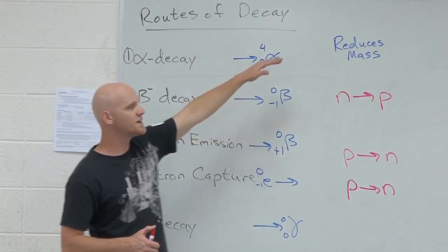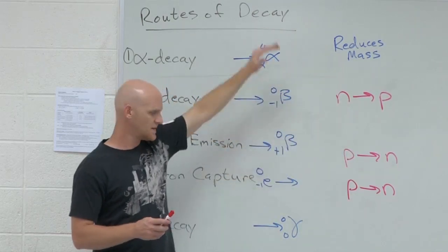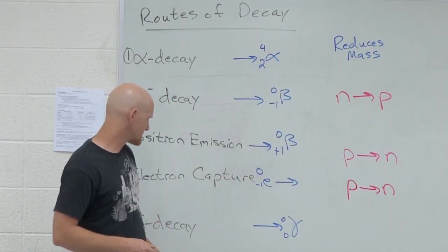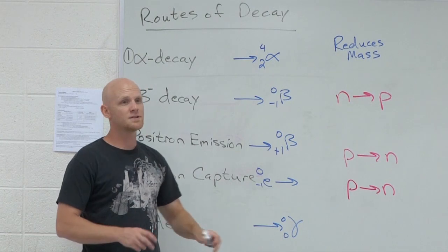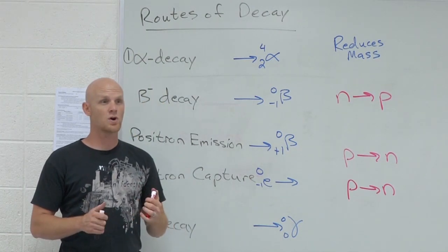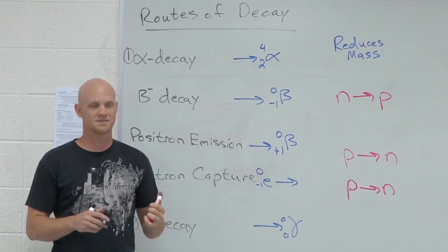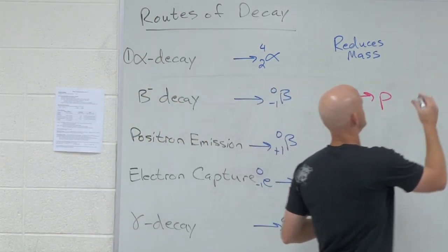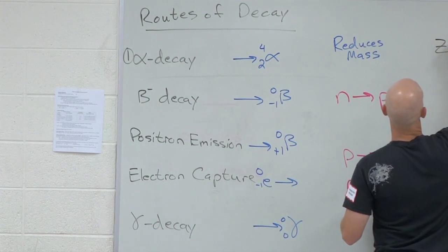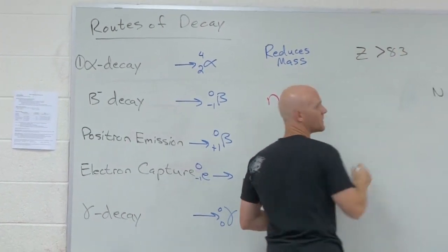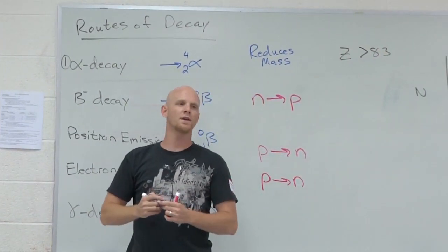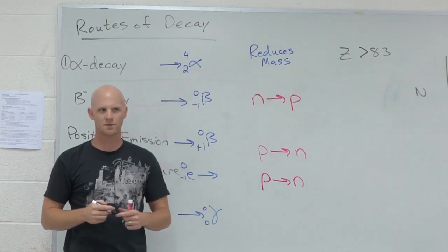The next thing we'll talk about is why would any element want to do one of these things? Which elements would like to lower their mass numbers, because they're all radioactive? Z greater than 83. If your atomic number is greater than 83, you're probably going to want to do some alpha decay. Lower your mass number down.